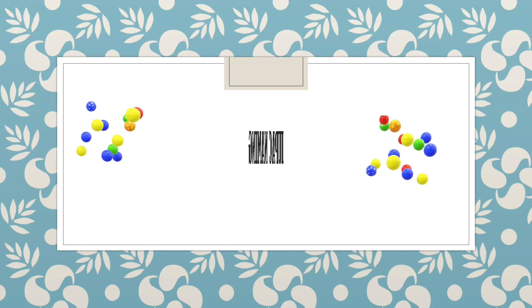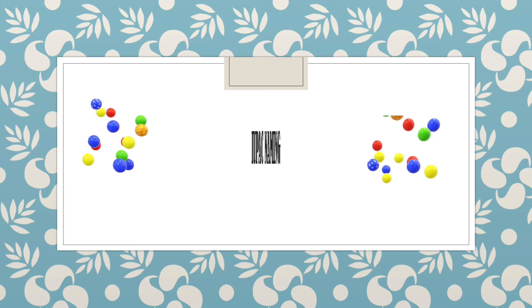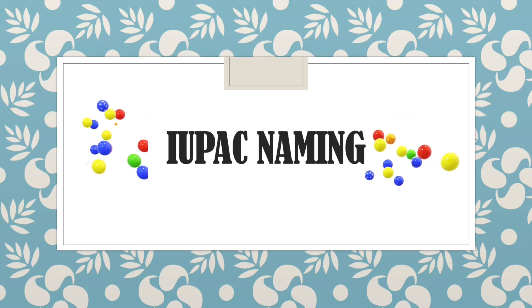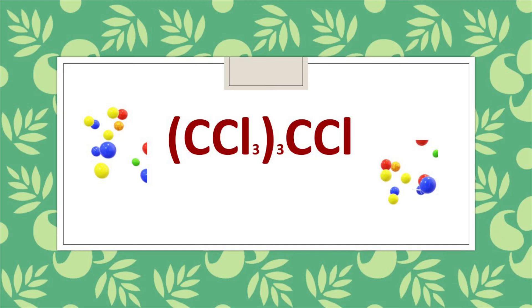Welcome to Aurora chemistry for everyone. Let us analyze how to write IUPAC name for the given compound (CCl3)3CCl.